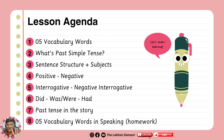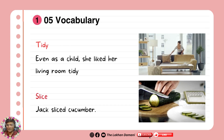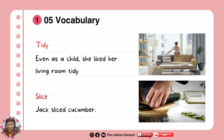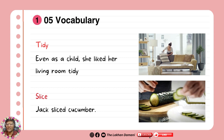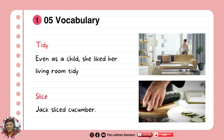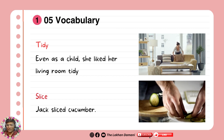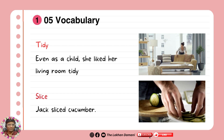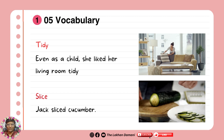The first point is we are going to understand five vocabulary words in video and in context. You're going to understand meaning by watching a short clip or by understanding with context. Our first word is tidy. Even as a child she liked her living room tidy. There is also the phrasal verb tidy up and it has the same meaning. You can message below by creating a sentence or writing the meaning.